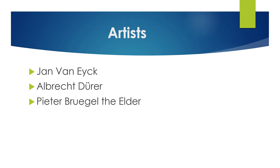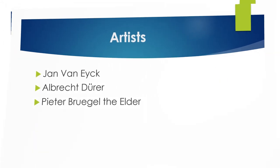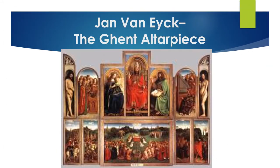Key Northern Renaissance artists include Van Eyck, Dürer, and Pieter Bruegel the Elder — you really just need to know one of the three. Van Eyck's most famous piece is the 15th-century Ghent Altarpiece. He was known for perfecting oil painting, using naturalistic wood panels with a lot of religious symbolism and great detail in his works.